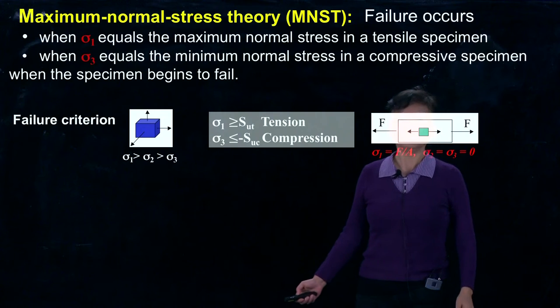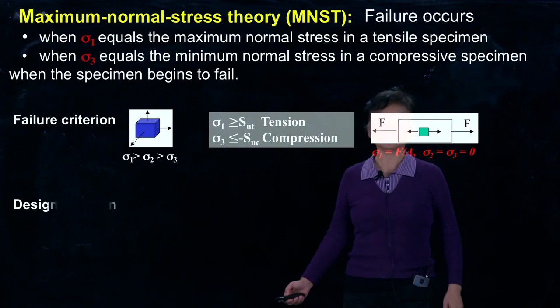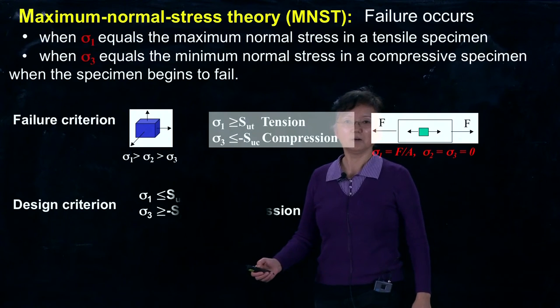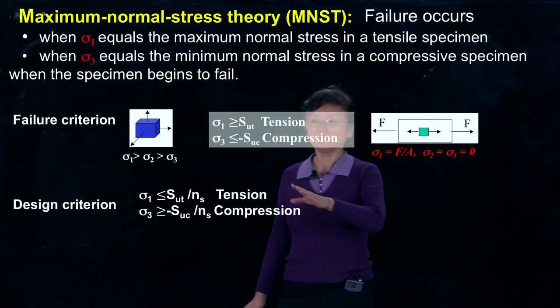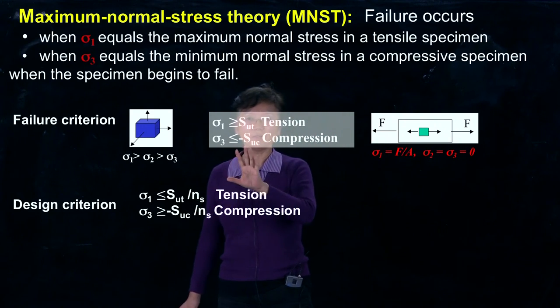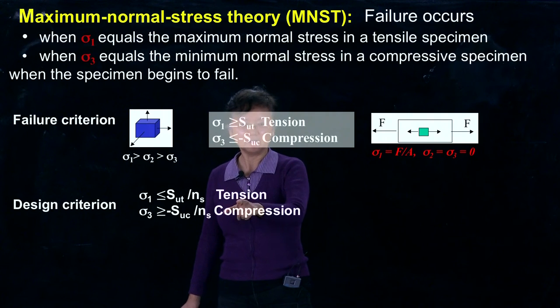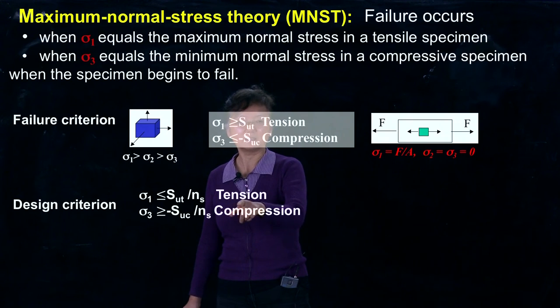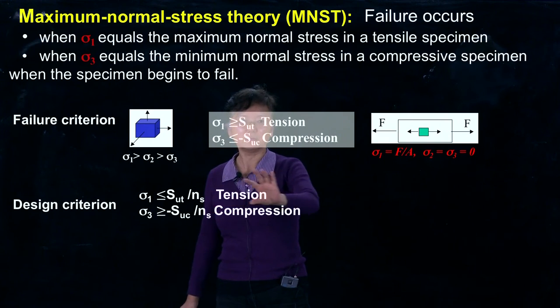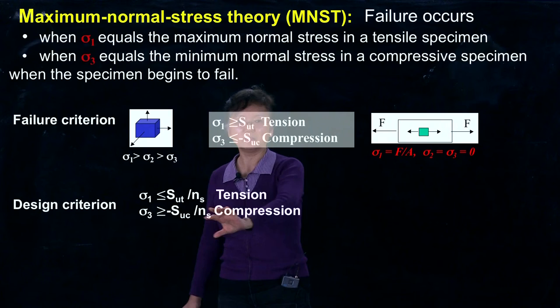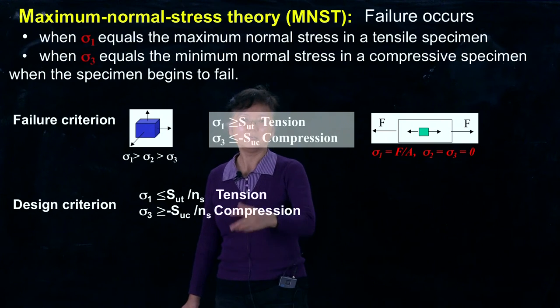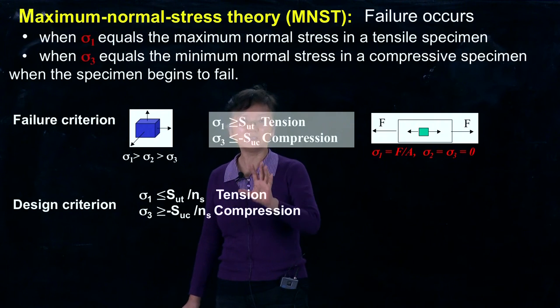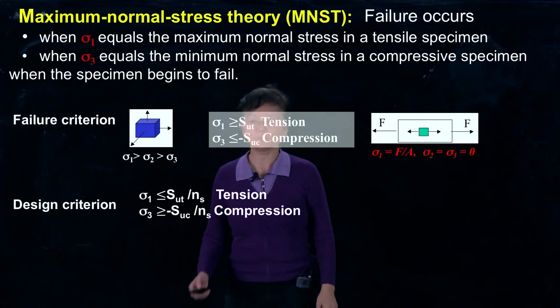On the other hand, if we switch this inequality sign, we get the design criteria. If our stress is smaller than the strength, we divide the strength by factor of safety, Ns. The top is under tension, the bottom is for compression. They both have the strength divided by factor of safety.